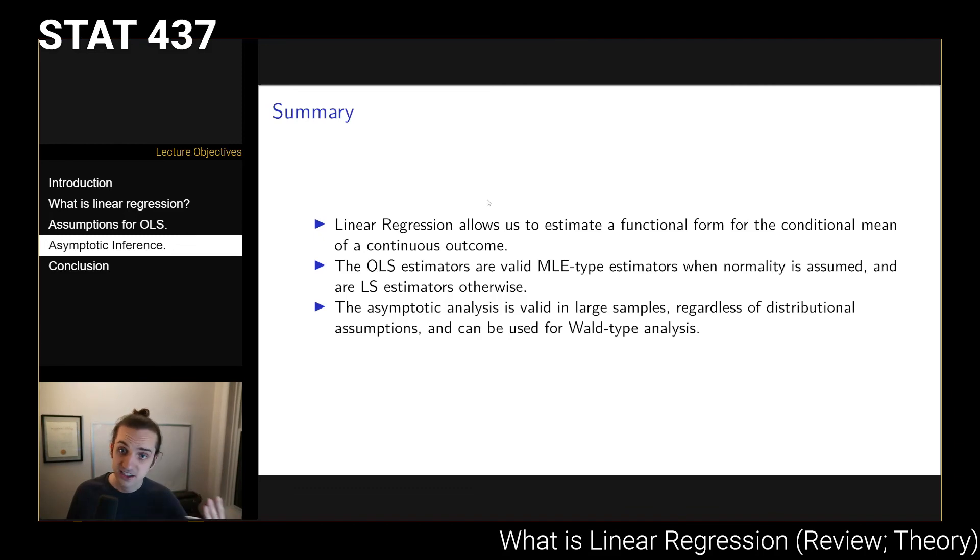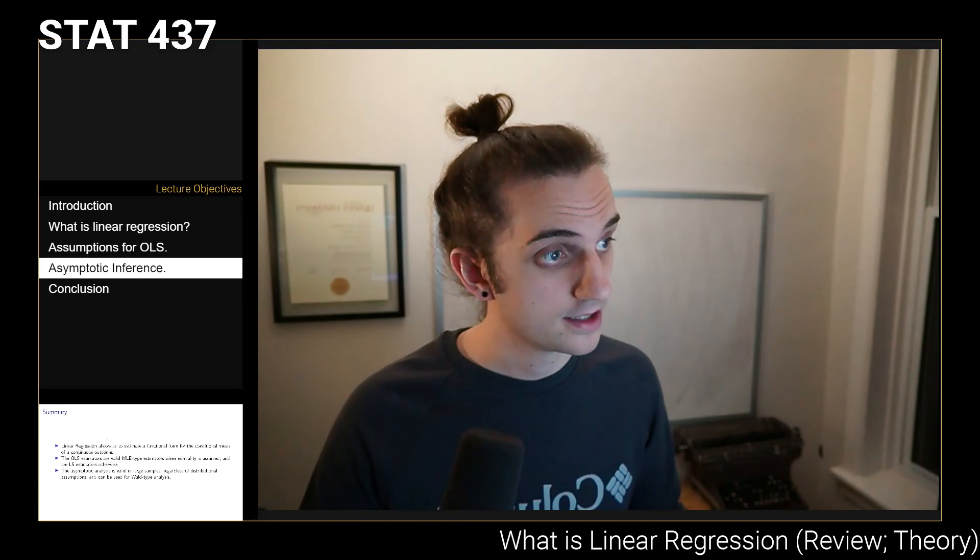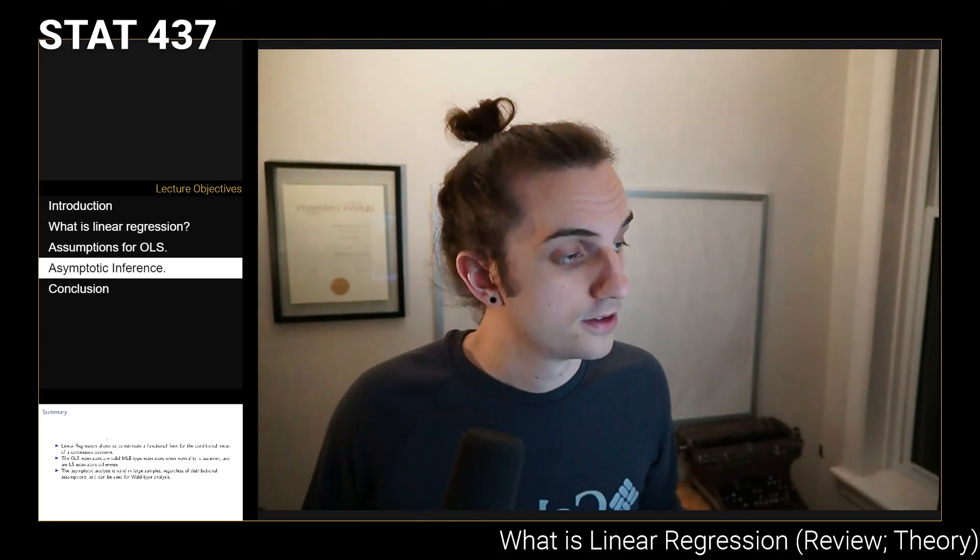And from these assumptions, whether we want to assume normality or not, we can derive a set of least squares estimators that are going to provide us valid asymptotic analysis based on this Wald-type analysis where we can build out the confidence intervals or the t tests that you're used to seeing. So that's really all you need to recall from linear regression. If you're comfortable with everything that I've discussed here, that's great. We can start learning to analyze longitudinal data from there.